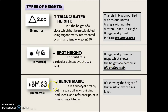Benchmark — BM is written in capital letters. It is showing the height of that mark above the sea level. It is a surveyor's mark cut in a wall, pillar, or building and used as a reference point in measuring altitude. This is the symbol of benchmark, and the number beside it can be any value, such as 56 or 36.